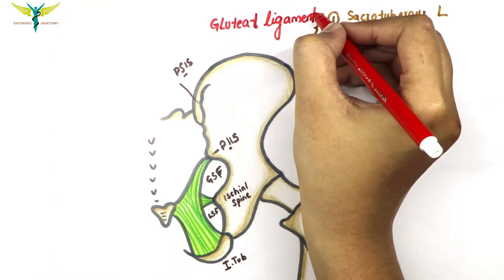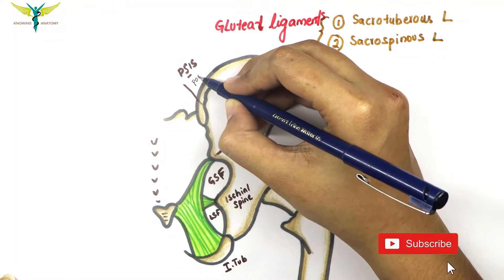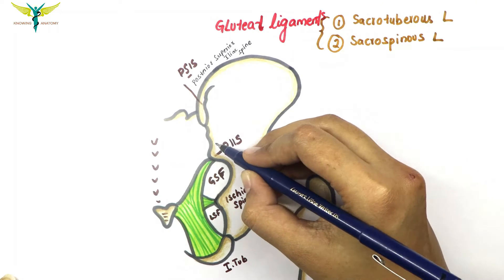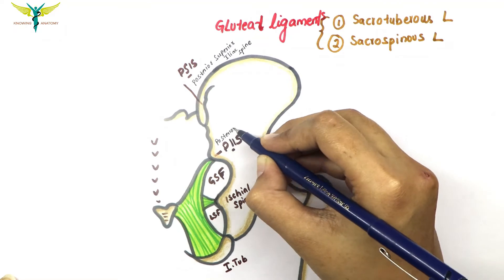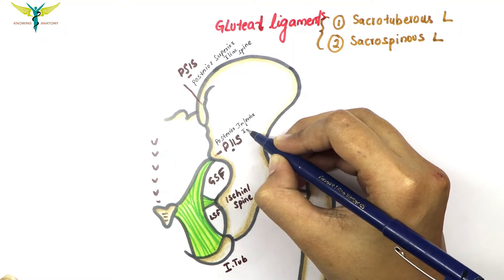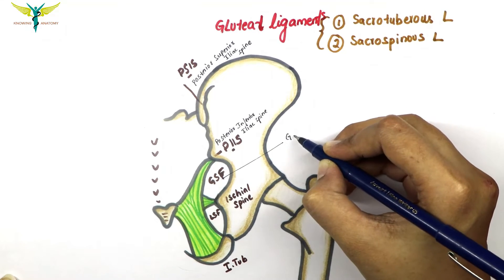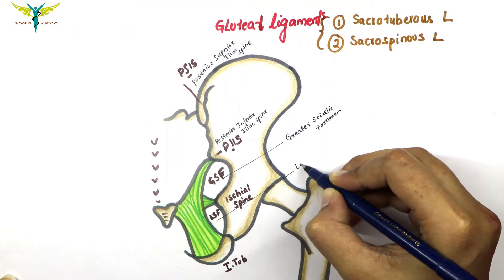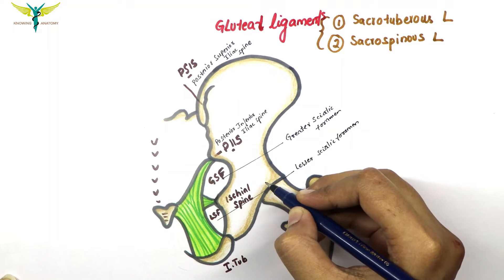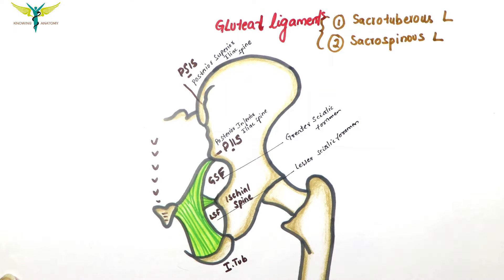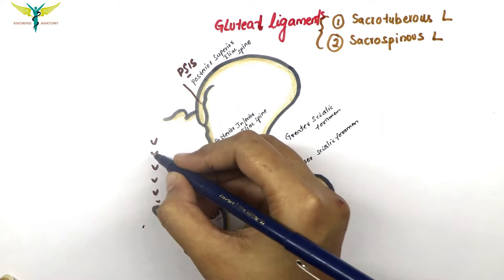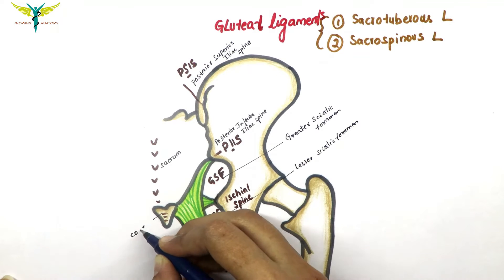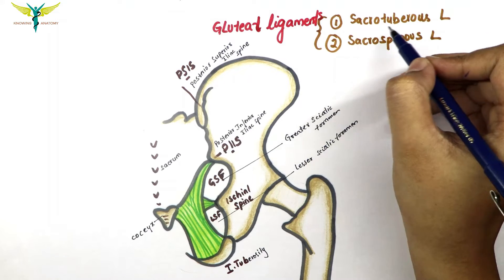Here is the posterior superior iliac spine and this is the posterior inferior iliac spine. This is the greater sciatic foramen and this is the lesser sciatic foramen. This spine is the ischial spine and this tuberosity is the ischial tuberosity. This is the sacrum and this is the coccyx.